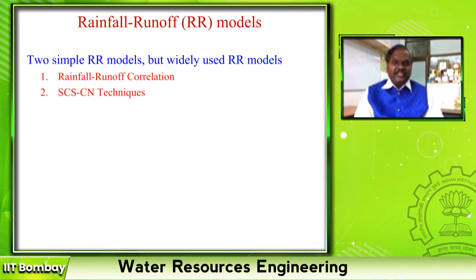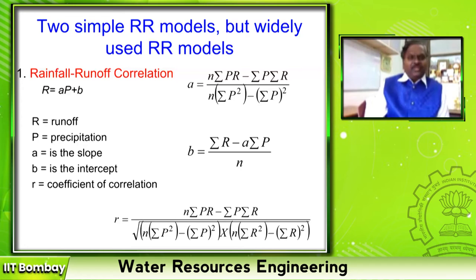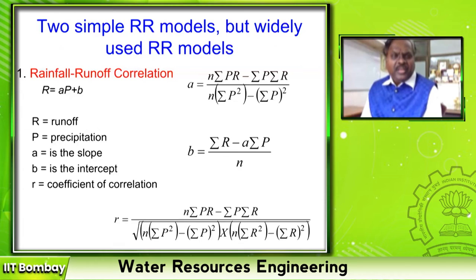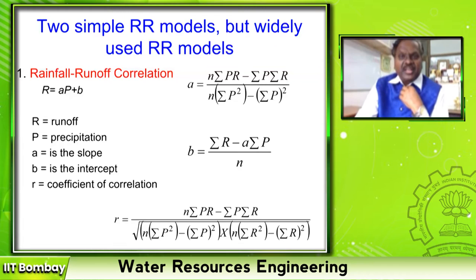Two basic models are: one is correlation. Developing a relationship between rainfall and runoff — even the English and Dezosa formula is based on this. R is equal to AP plus B. You can estimate the coefficients A and B using the method of least squares, method of moments, or method of likelihoods. These three methods are used to estimate parameters in hydrology. This one is estimated using the method of least squares.